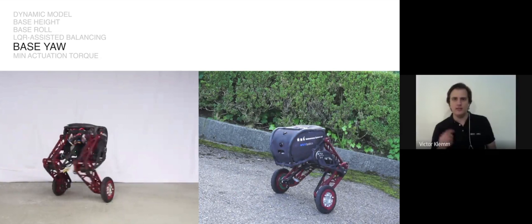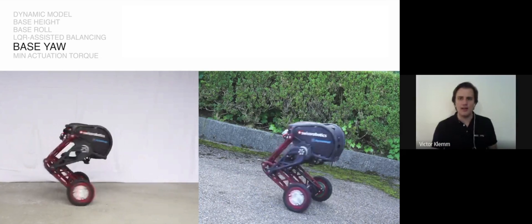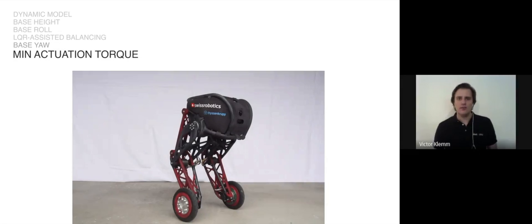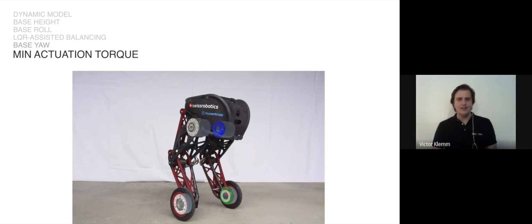The next task is the base yaw task allowing to control the heading direction of the robot. And the final task minimizes the motor torques and thus minimizes power consumption and enforces thereby a single solution. The controller was tested in Gazebo, ported with minor adaptations to the real robot. Of course it didn't work right away, but after some bug fixing and tweaking we had it running. And tuning parameters was very easy as each task can be independently tuned.